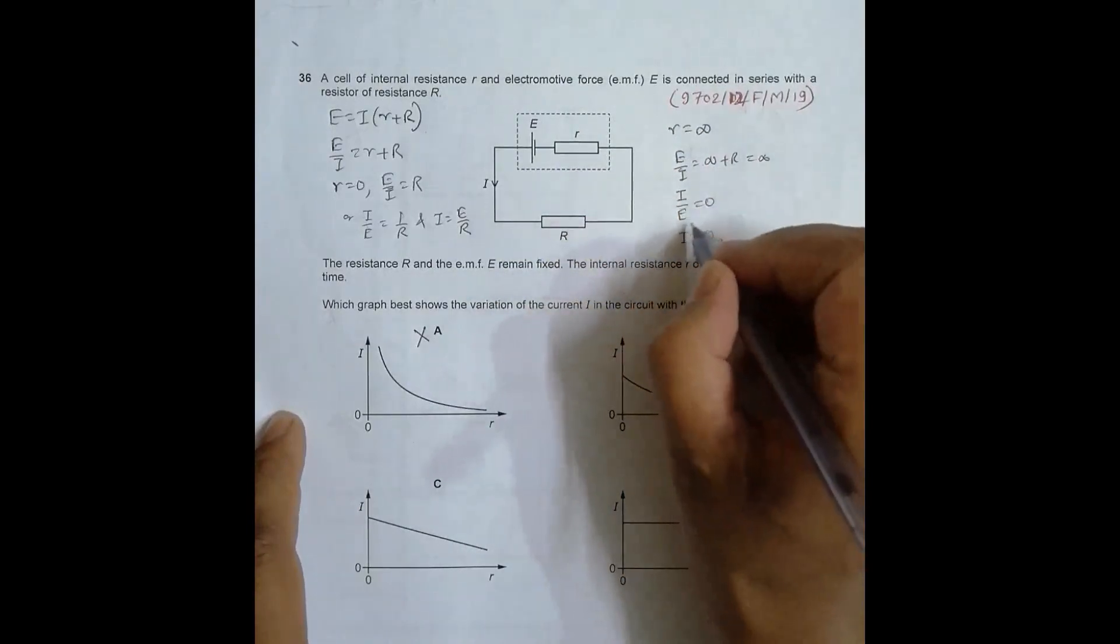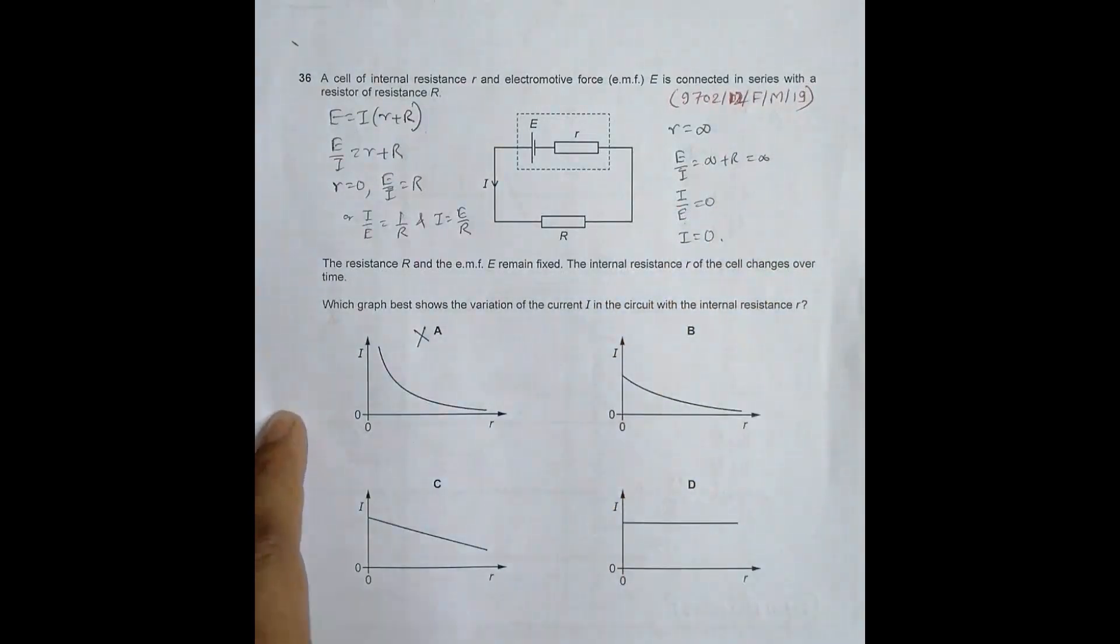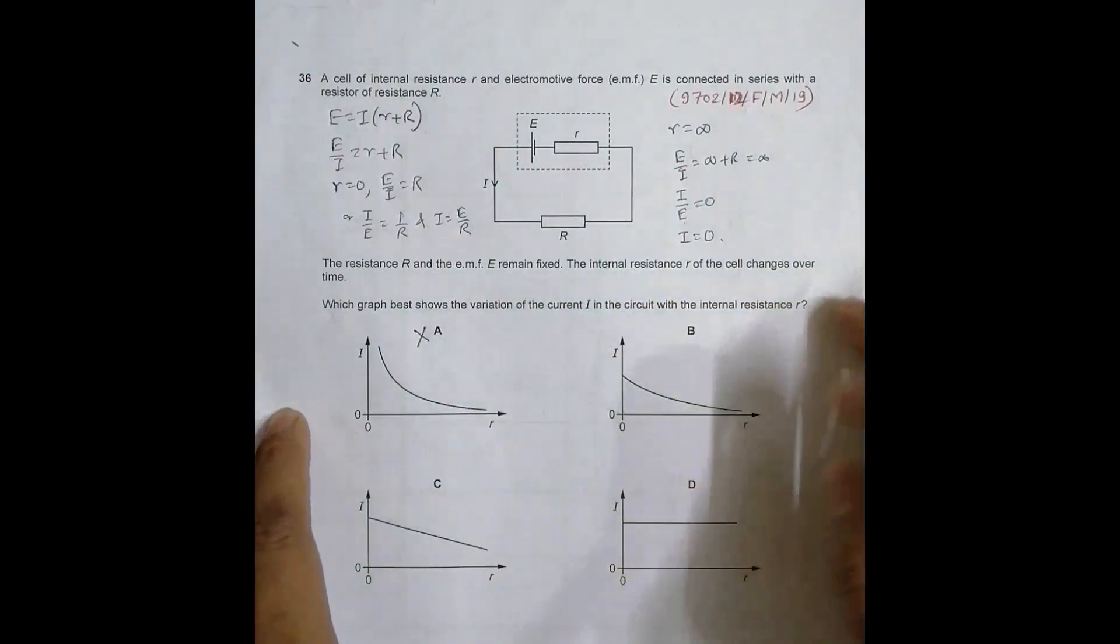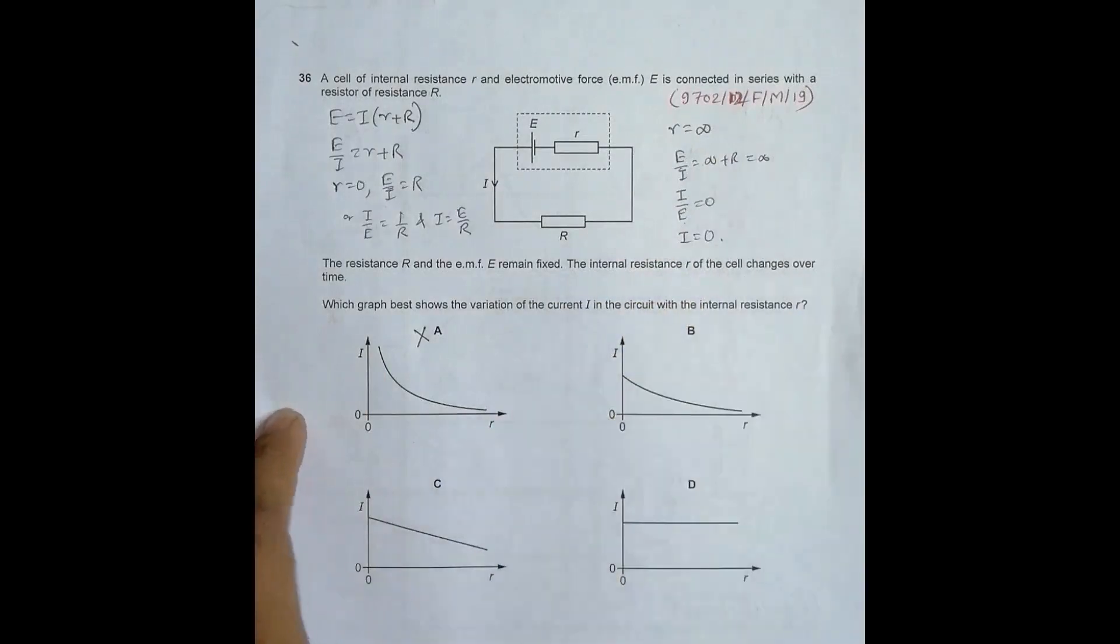Because E is a constant value here, it is not 0. So that means when r equals infinity, I becomes 0. If I go through the graphs, in this case I is never 0, so this disqualifies. In this case we have I is 0, but at that time this r is not going to infinity.